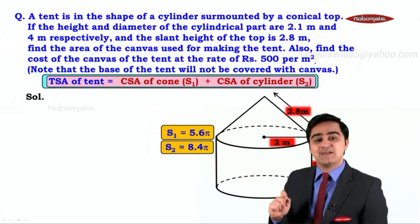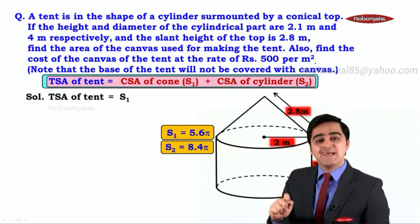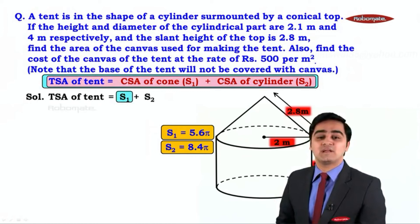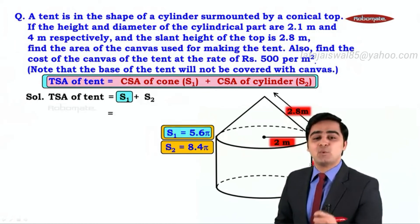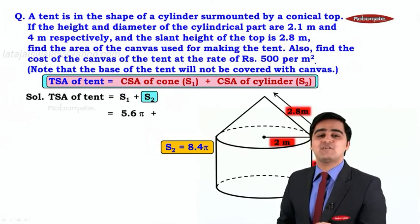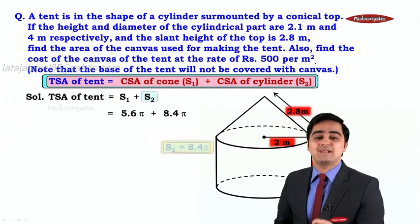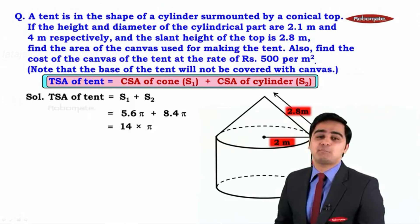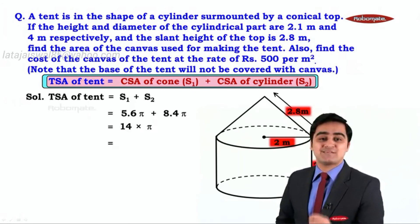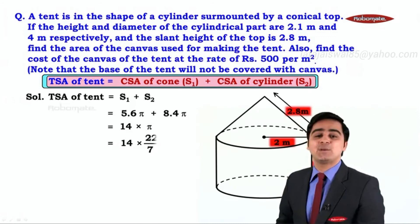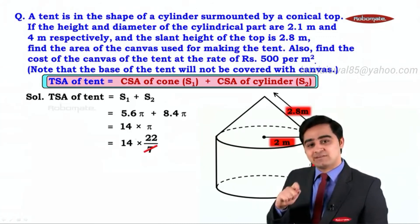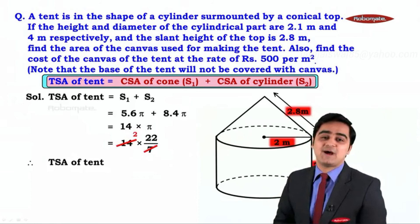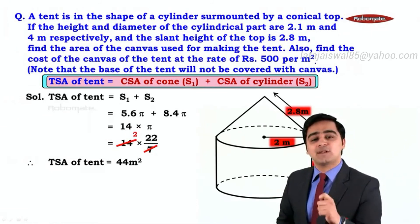Now let us calculate the total surface area of the tent, which is equal to S1 plus S2. S1 is the curved surface area of the cone, which is 5.6π, and S2 is the curved surface area of the cylinder, which is 8.4π. So 5.6π plus 8.4π equals 14π. We know that π equals 22 by 7, so we have 14 × 22 by 7. Two into 22 is 44. So the total surface area of the tent is equal to 44 meter square.